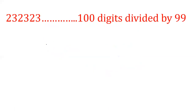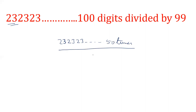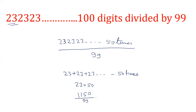Suppose we generalize this question: if 23 is occurring 50 times — that is, a 100-digit number — divided by 99. The answer will be 23 plus 23 plus ... 50 times, which is 23 into 50, giving 1150. Now 1150 divided by 99: this can be written as 11 into 100 plus 50, divided by 99. Since 100 divided by 99 gives remainder 1, we get 11 into 1 plus 50, which is 61. So the final answer is 61.